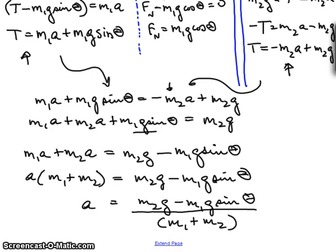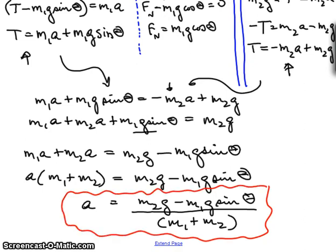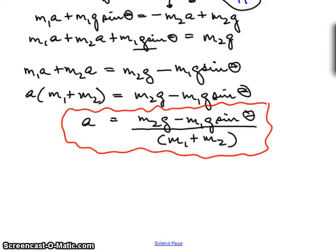This is our equation for acceleration. You can see what's happening here. m2g is falling, m1g is trying to fall the other way, but it's on a ramp and can't fall with its full force. So you multiply it by the sine of theta. Notice the masses are acting together, so it's m1 plus m2. One last item before we run out of time.